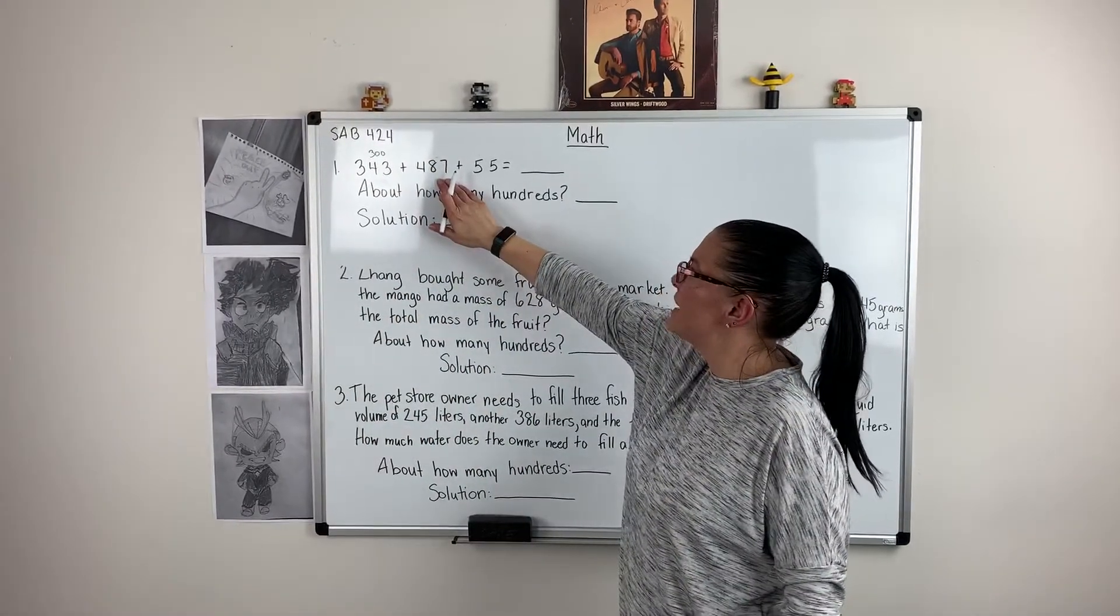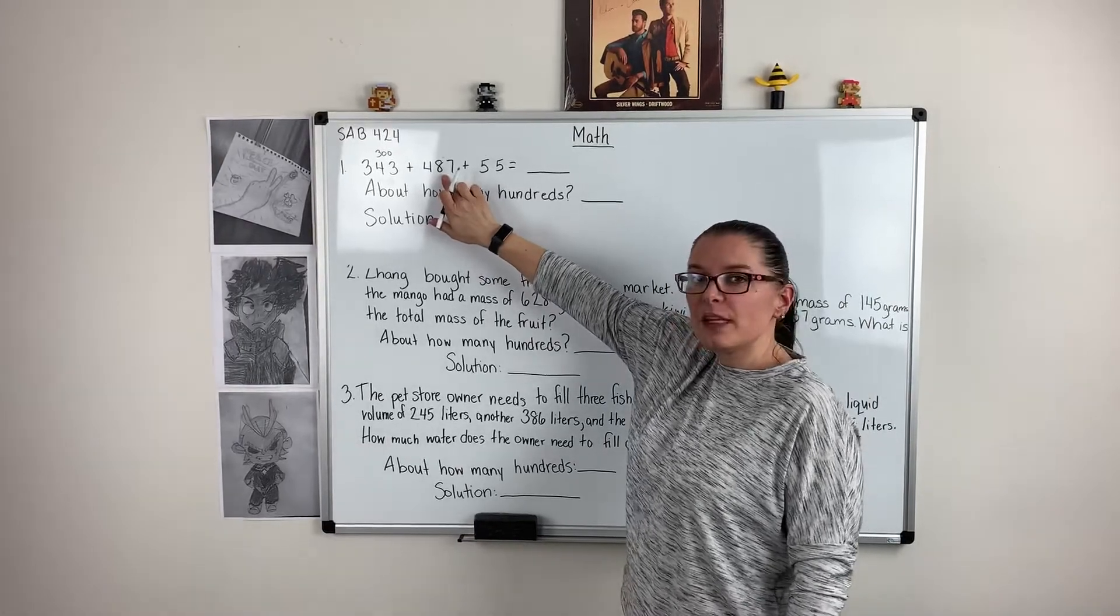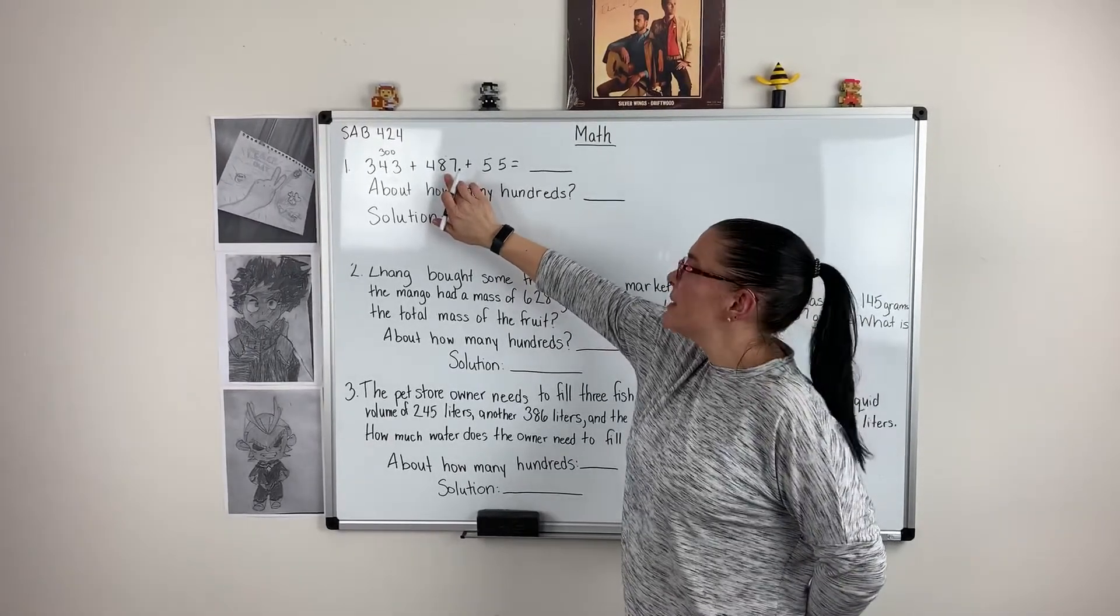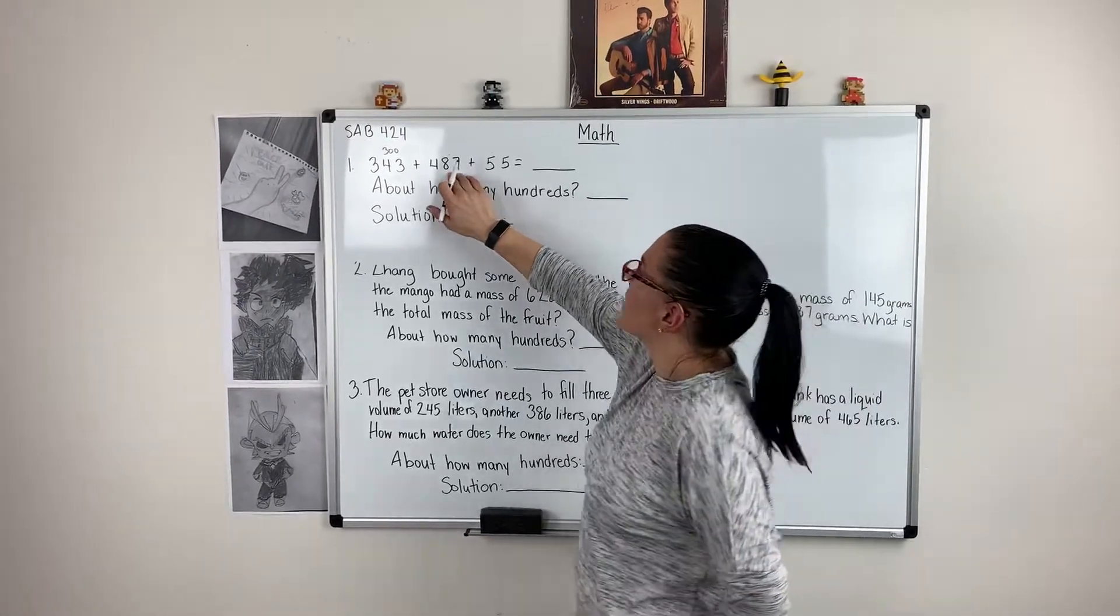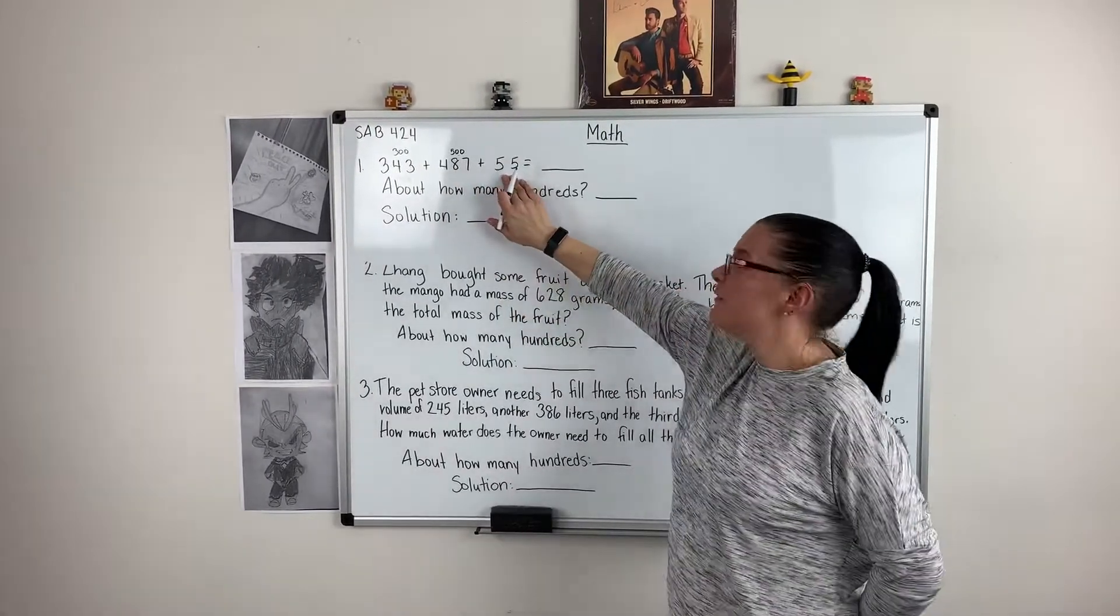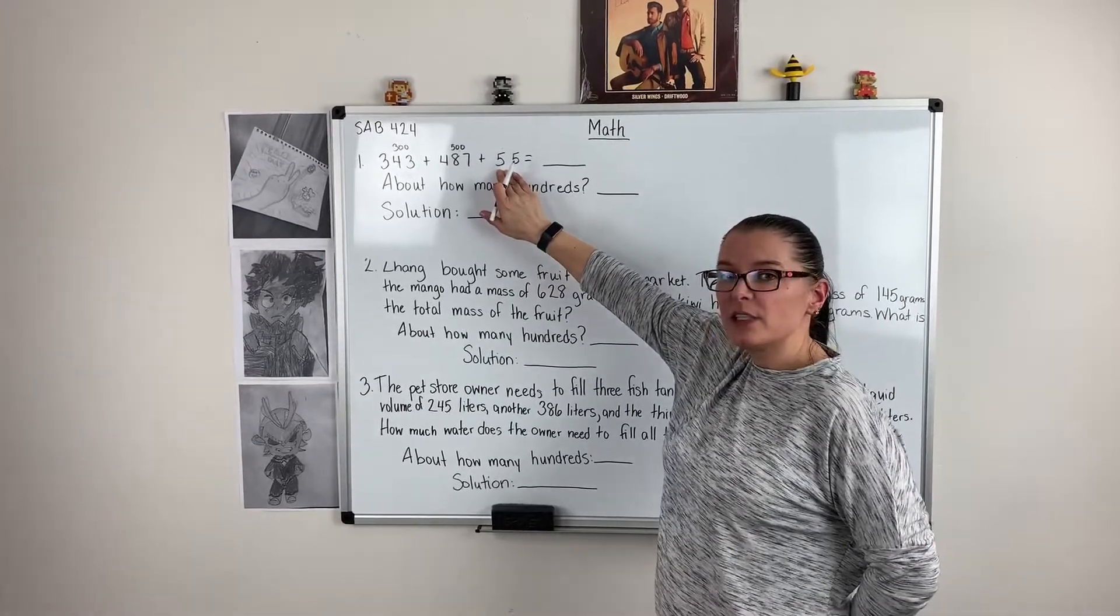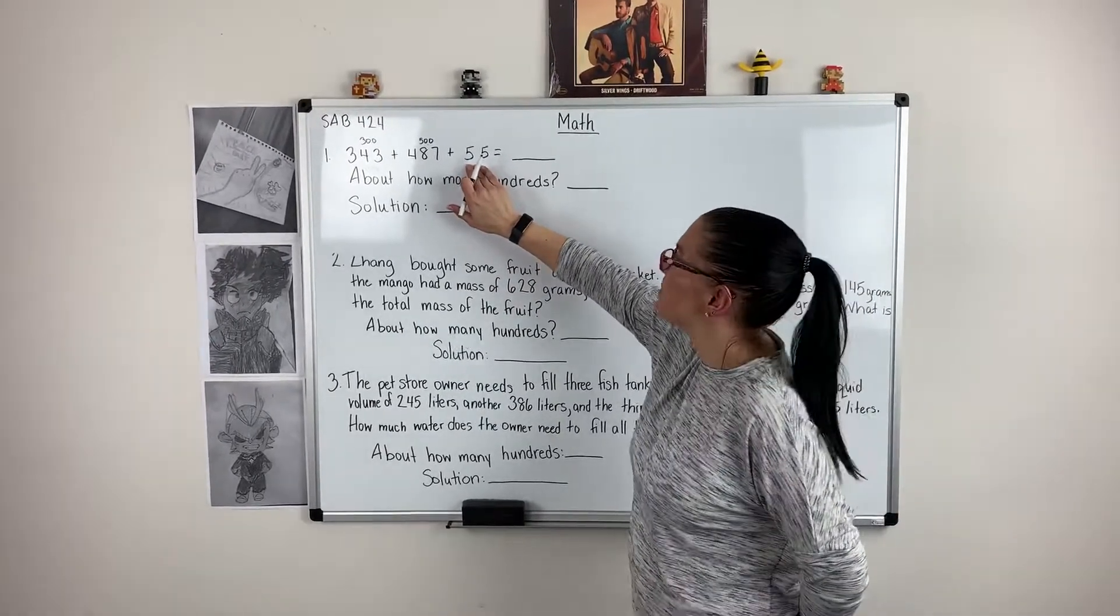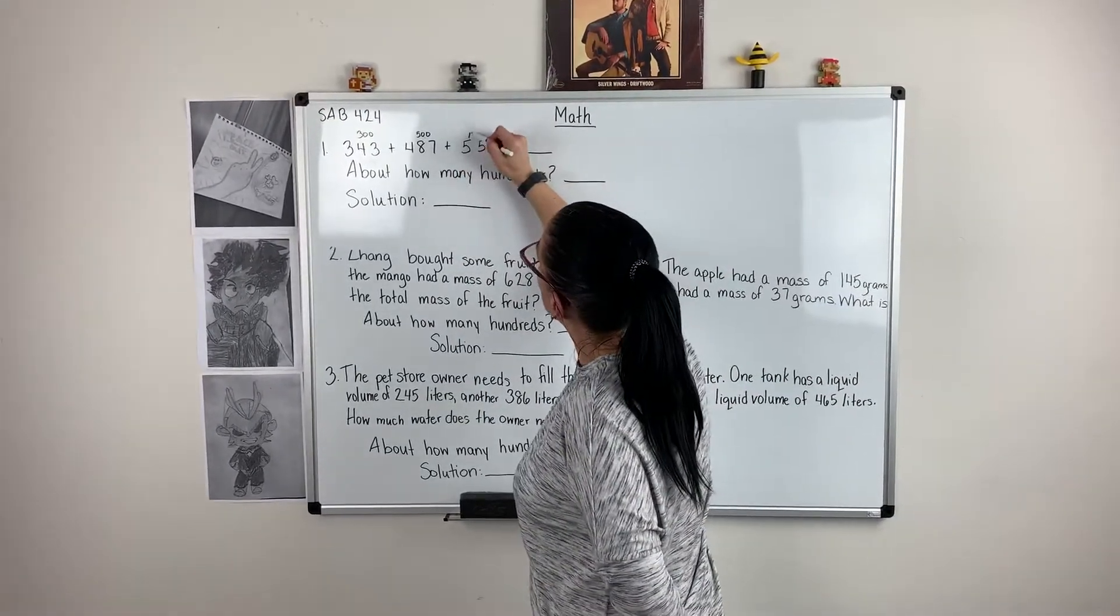In 487 I'm going to look at my tens place. I see that there's an eight which means I'm going to round up, so this one's going to be about 500. I'm going to look at 55. I see a five in my tens place which means again I'm going to round up, which means that's about 100.